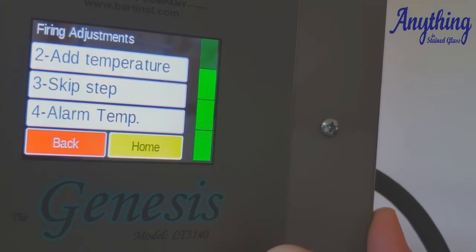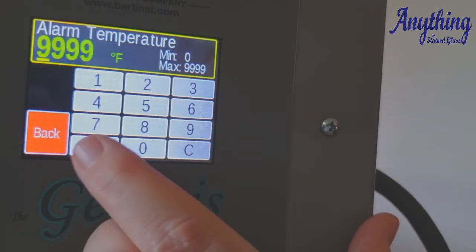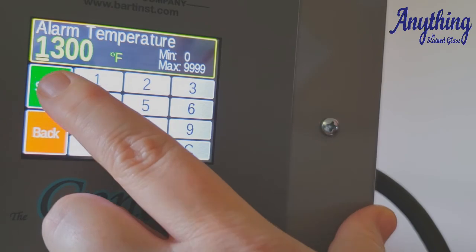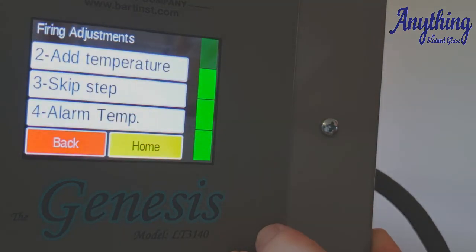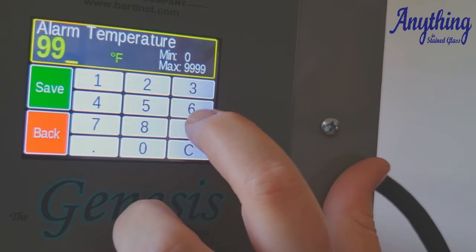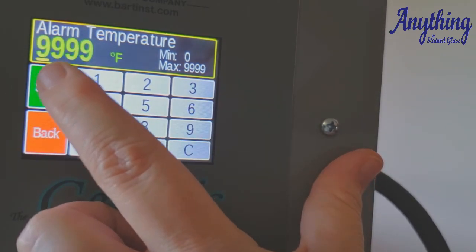The basic alarm is set to off. So let's say that you have something you need to do during your firing, but you need to know when it gets to 1,300 degrees. You come in here and program it to 1,300, and it'll start beeping at you at 1,300 degrees. But again, the basic is just left off with 9,999.